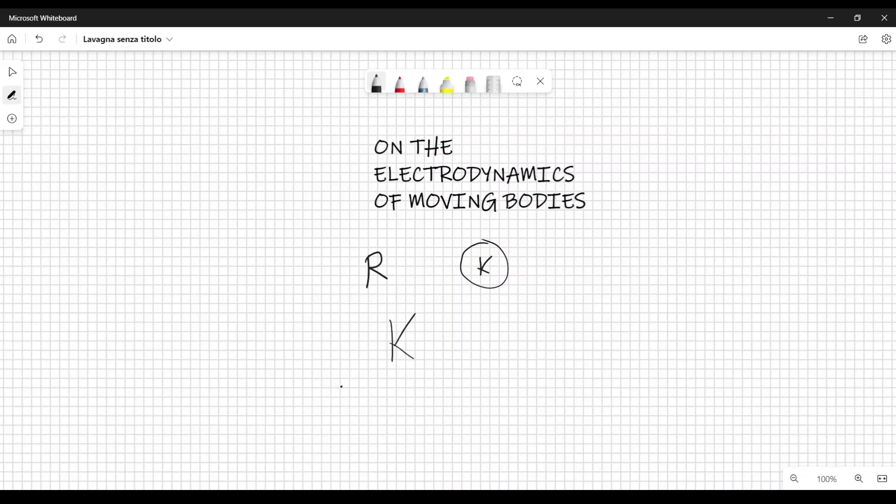And the velocity of lowercase k with respect to uppercase K is v. Then the equation of this sphere with respect to the system lowercase k is ξ² + η² + ζ² = R². Here, where ξ, η, and ζ are defined as in the previous lecture. So, you might need to watch the previous lecture if you really want to understand the meaning of these terms.